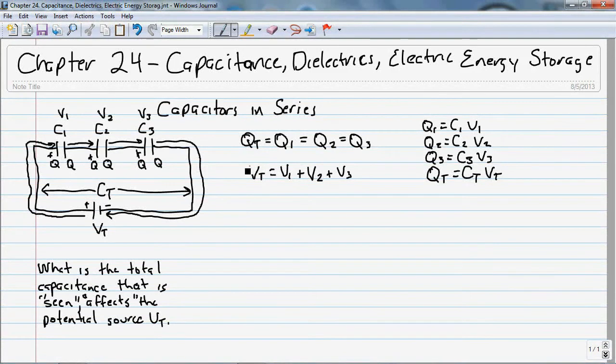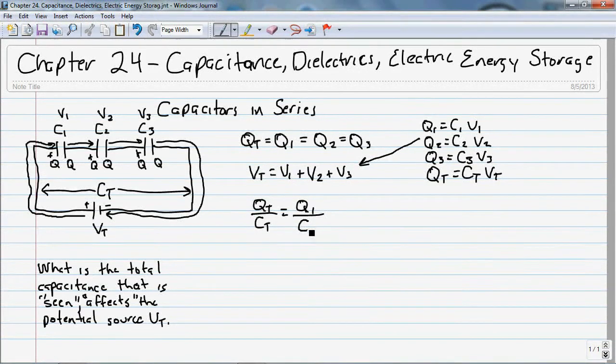And I have this formula for the addition of all of the potentials of the capacitors equals the potential of the source. And I can rearrange these equations to fit here. So, I'm going to have Qt over CT is equal to Q1 over C1 plus Q2 over C2 plus Q3 over C3.